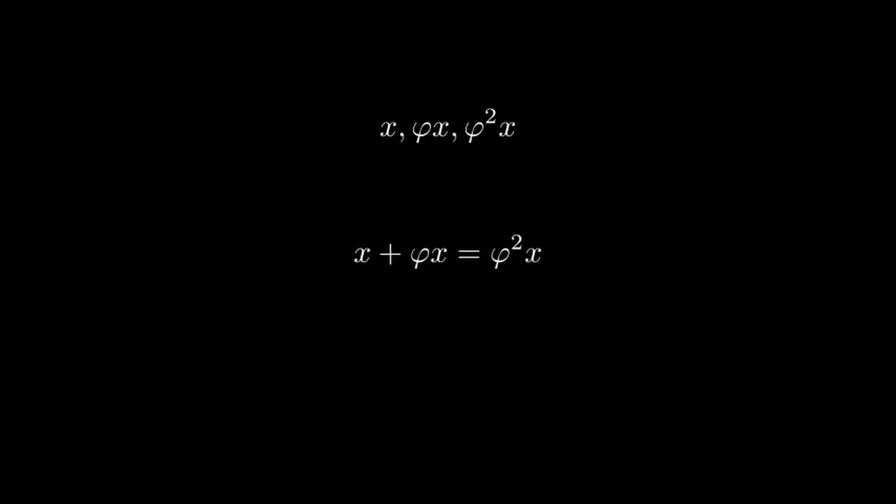We can also divide by x on both sides, giving us 1 plus phi is phi squared. This reveals a very interesting property of the golden ratio, that squaring it is the same as adding 1, but it also allows us to calculate its exact value with the quadratic formula.